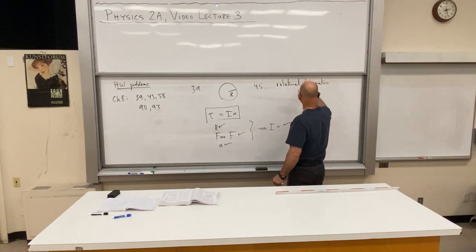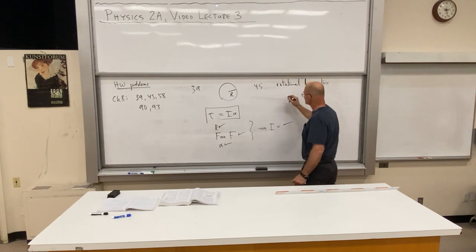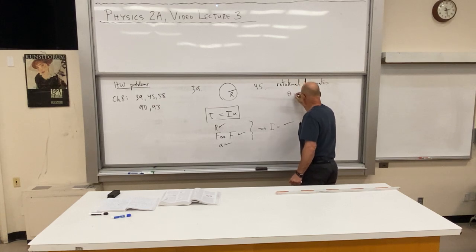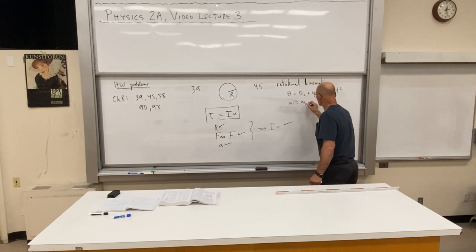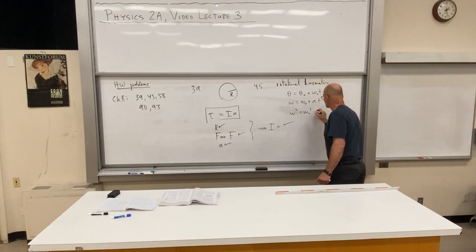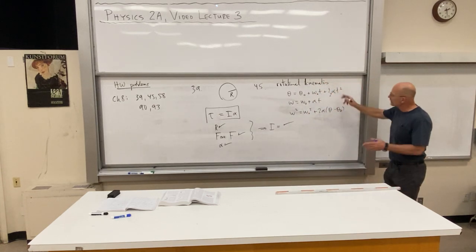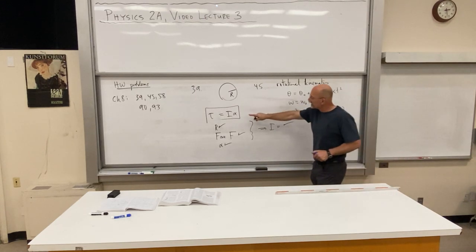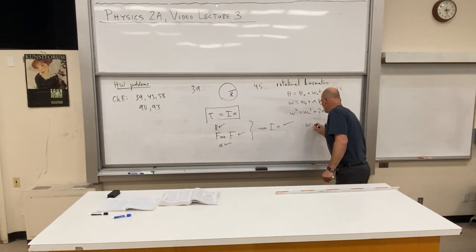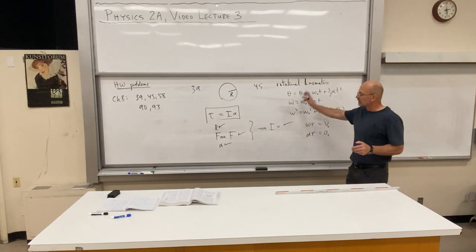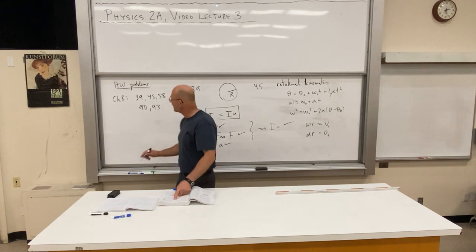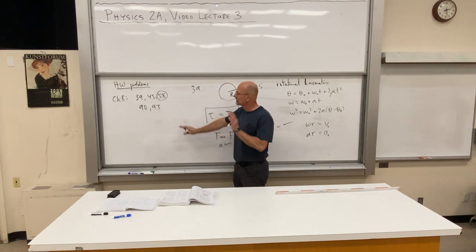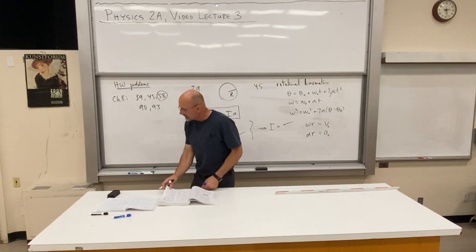Problem 45 is a merry-go-round being spun by pulling on a rope — again use tau = I alpha. For both 39 and 45 remember your rotational kinematics: theta equals theta_0 plus omega_0 t plus one-half alpha t squared; omega equals omega_0 plus alpha t; omega squared equals omega_0 squared plus 2 alpha times (theta minus theta_0). Also omega r equals v tangential and alpha r equals a tangential. Problem 58 is the bucket problem I set up in your notes.